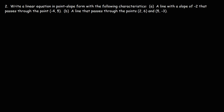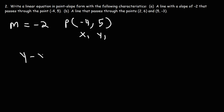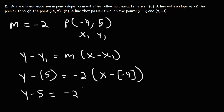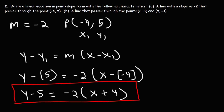For the next problem, we're going to write a linear equation in point-slope form with the following characteristics. For part A, we have a line with a slope of negative 2 that passes through the point negative 4, 5. We replace y1 with positive 5, m with negative 2, and x1 with negative 4. We now have two negative signs: negative 2 times negative 4 gives positive 4. So our answer in point-slope form is y minus 5 is equal to negative 2 times x plus 4.